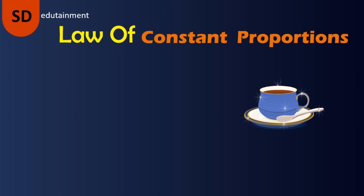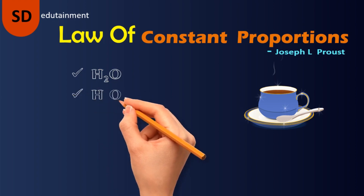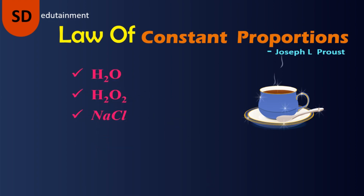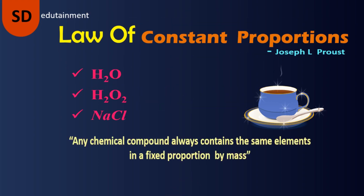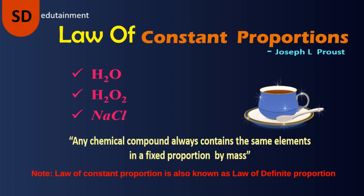This tea preparation concept is not only applicable for carbon dioxide and carbon monoxide, but also for water, hydrogen peroxide, and salt. Our tea concept teaches us that in this world, any chemical compound must always contain the same elements in a fixed proportion — and this is what was observed by Joseph L. Proust. Hope you enjoyed the present concept of the law of constant proportions by observing surrounding things like tea, water, salt, and so on.